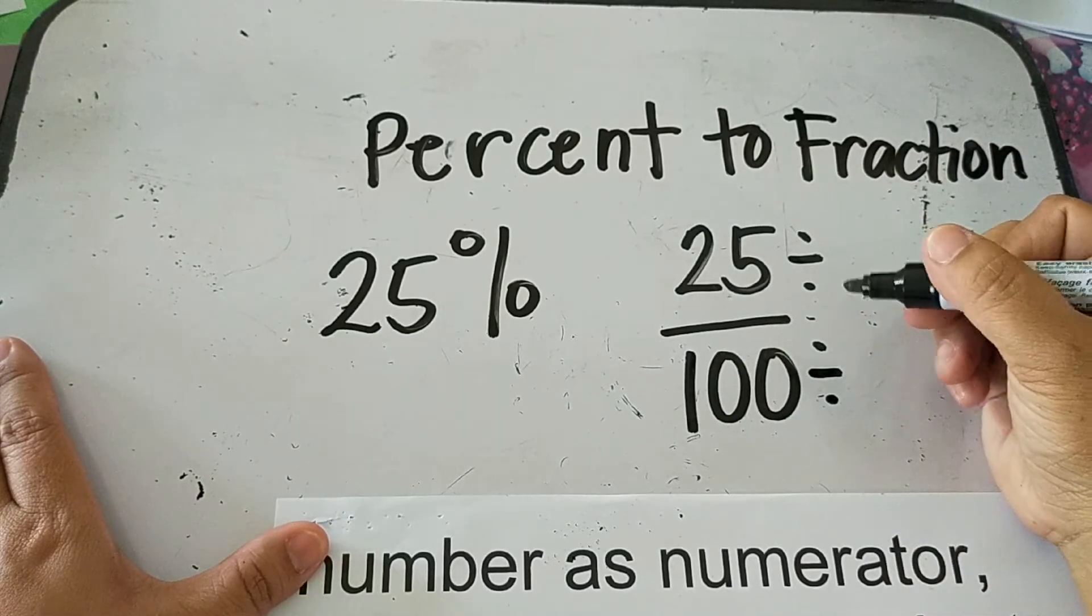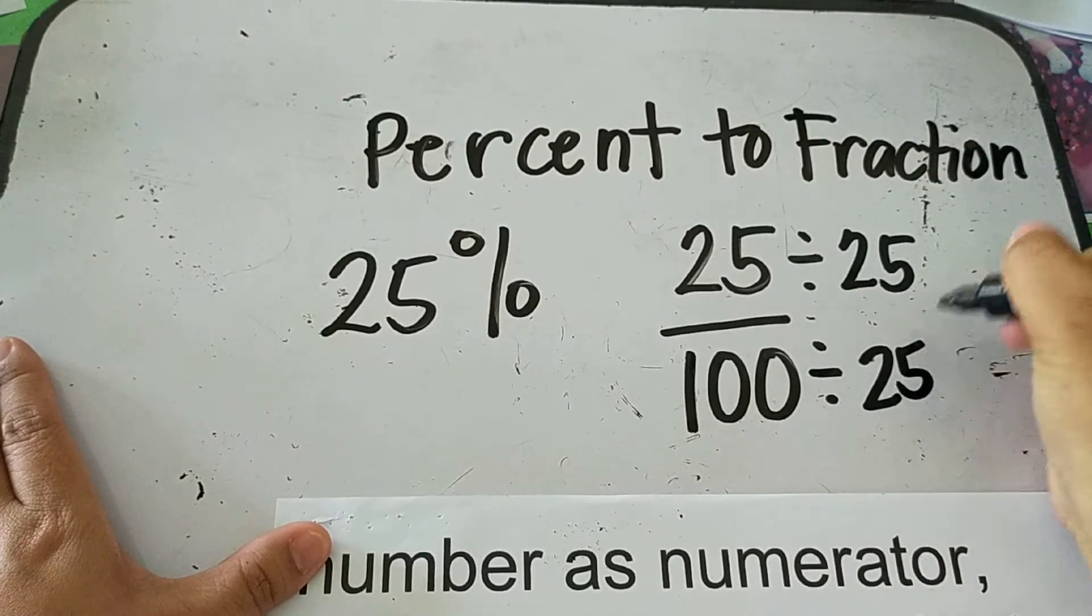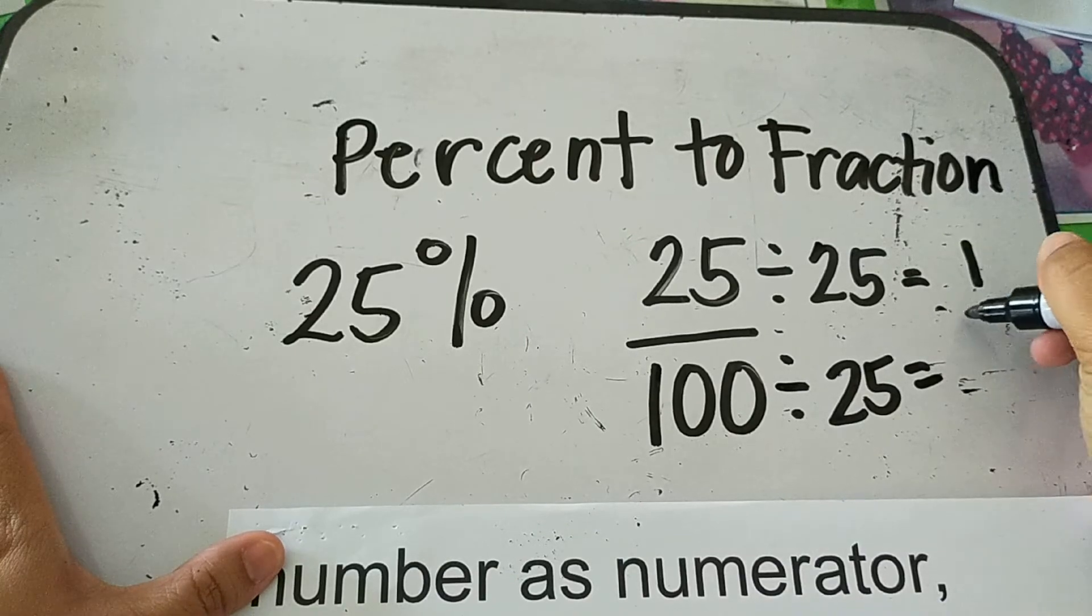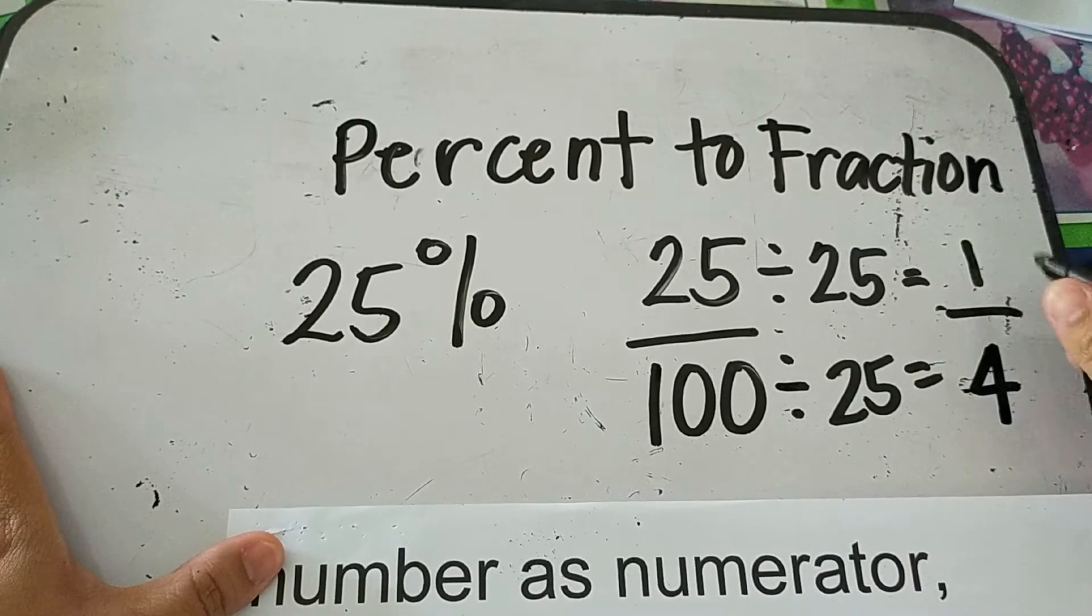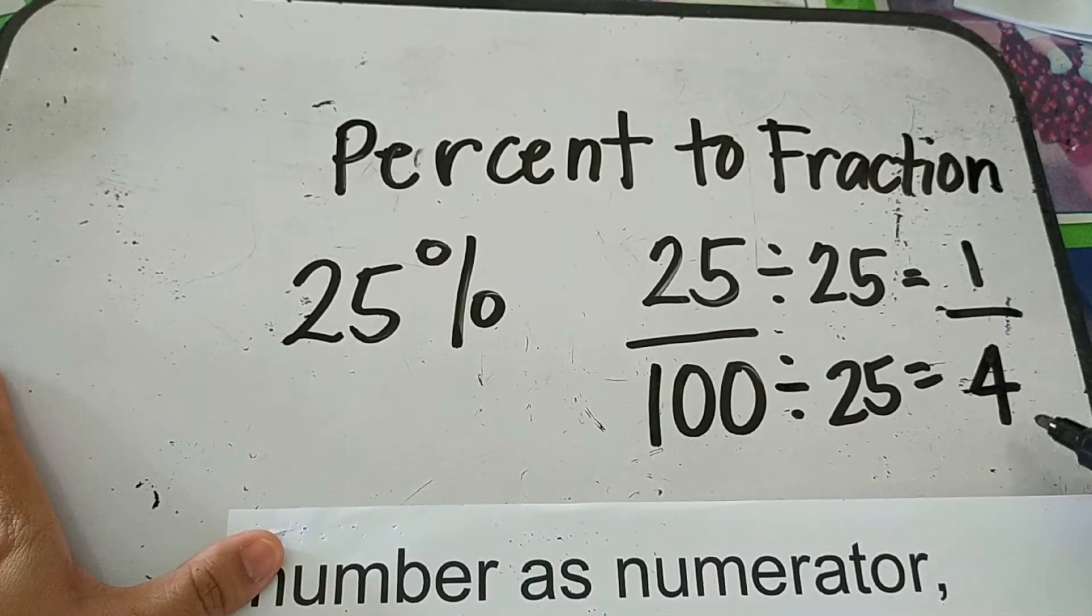So the GCF of 25 and 100 is 25. So 25 divided by 25 is 1. 100 divided by 25 is 4. Then, the fraction form of 25 percent is 1/4.